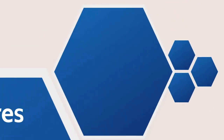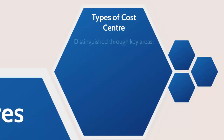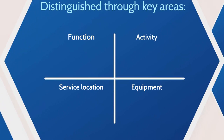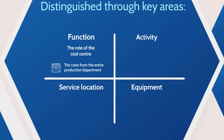There are different types of cost centers you'll be expected to be aware of in your exam. We've seen that the pie shop has costs directly related to each pie, like the cost of ingredients, as well as costs associated with the production of each pie. It's possible to differentiate between costs based on four key areas: by function, by activity, by service location, and by equipment. A function cost center refers to an entire department or role within a business — for the pie shop, the production department would be one cost center where all costs associated with creating the product, such as the making and baking of the pies, would be included.